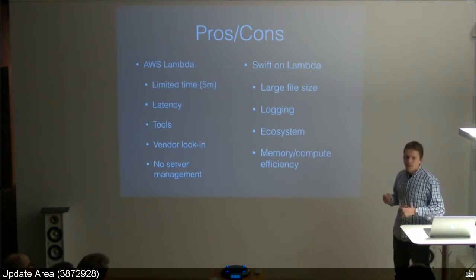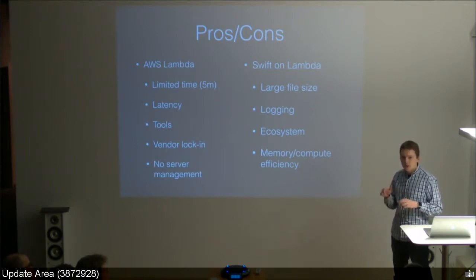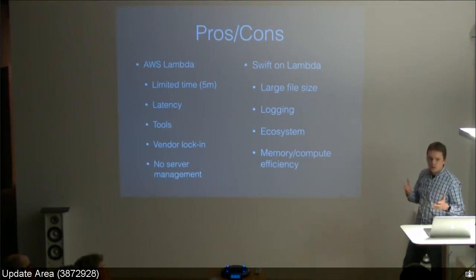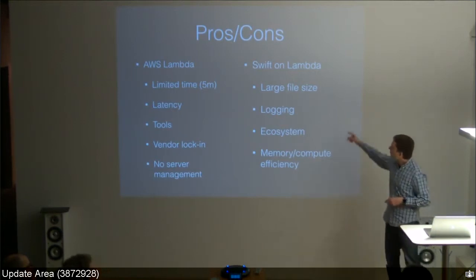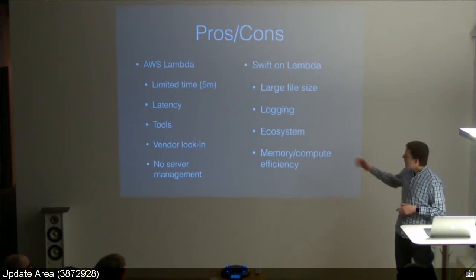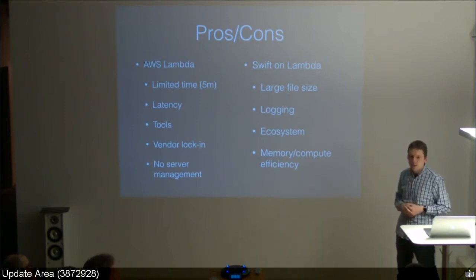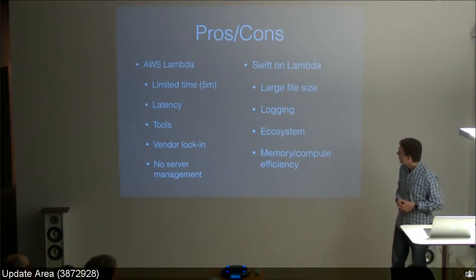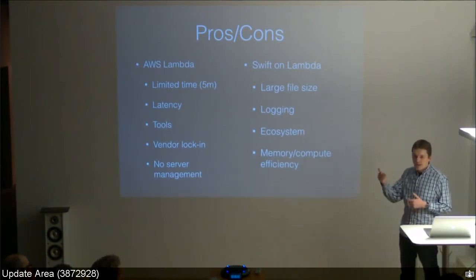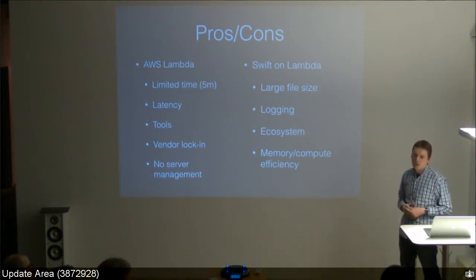The upside: hardly any server management — especially for a side project where you don't want to be involved in system administration. On the Swift side: the basic package is already 25 megabytes, which is 50% of the 50 MB limit. Logging is awkward because standard out is used for passing data, so all logging must go to standard error. The ecosystem is basically non-existent — if you need a library, you probably have to write it yourself. The main upside of Swift here is that it's memory and compute efficient, and since you're paying by time and memory usage, that could be a good reason to use it.